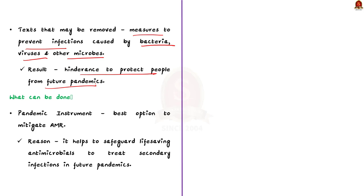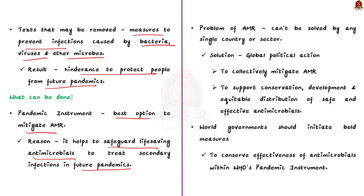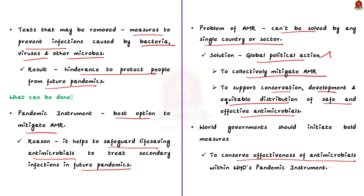What can be done to address this issue? The pandemic instrument is the best option to mitigate antimicrobial resistance. The instrument will also help us to safeguard life-saving antimicrobials to treat secondary infections in future pandemics. As of now, the problem of AMR can't be solved by any single country or sector. Therefore, global political action is needed to collectively mitigate antimicrobial resistance and to support the conservation, development, and equitable distribution of safe and effective antimicrobials. The world governments should initiate bold measures to conserve the effectiveness of antimicrobials within the WHO's pandemic instrument. In this discussion, we have seen about antimicrobial resistance, why it has been in news, and what will be the implications if antimicrobial resistance is not added to the pandemic instrument.